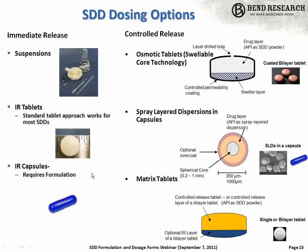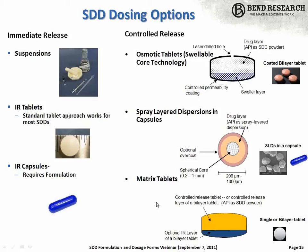We very often use an immediate release tablet approach — a rapidly disintegrating tablet. It's our usual approach for STDs in the solid dosage form. They can also be placed in capsules, although if one isn't careful you can get poor performance from a capsule, which is an artifact of how they're prepared rather than an indication that the STD won't work. Dispersions can also be put into controlled release dosage forms, including an osmotic tablet or a swallowable core tablet, or spray layer dispersion — a bead-based approach that's a pretty flexible platform. In principle they could also be put in a matrix tablet, though that's not a method we practice often.